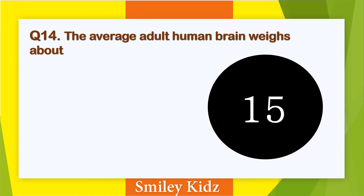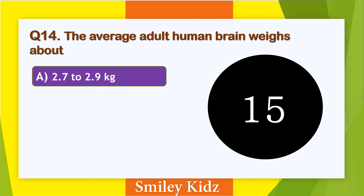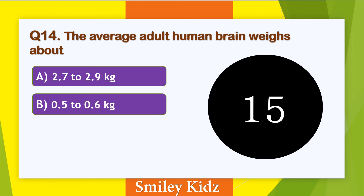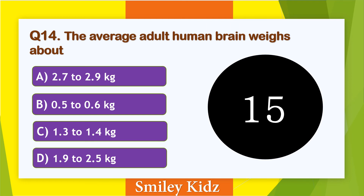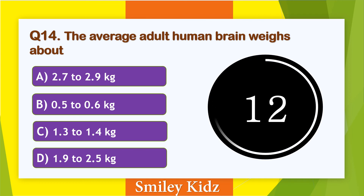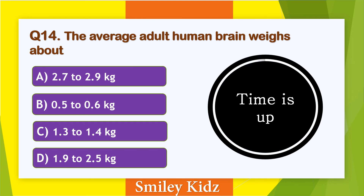Question number 14. The average adult human brain weight. The options are: A. 2.7 to 2.9 kg, B. 0.5 to 0.6 kg, C. 1.3 to 1.4 kg, and D. 1.9 to 2.5 kg. Your time starts now. Your time is up. The right answer is 1.3 to 1.4 kg. The average adult human brain weight is 1.3 to 1.4 kg.